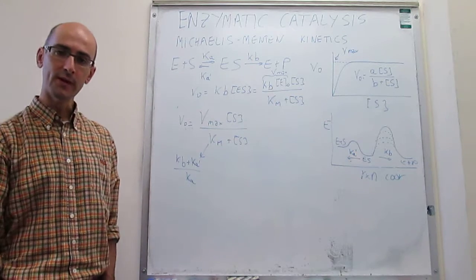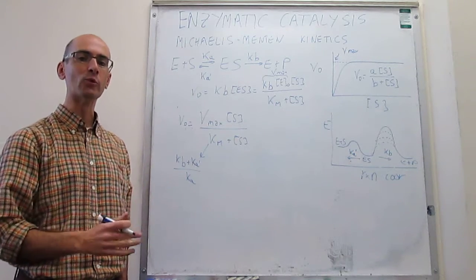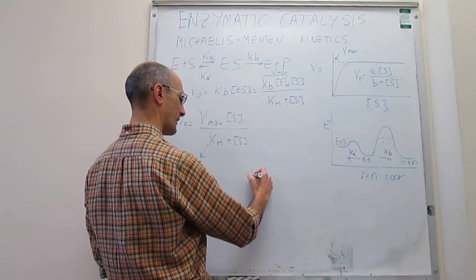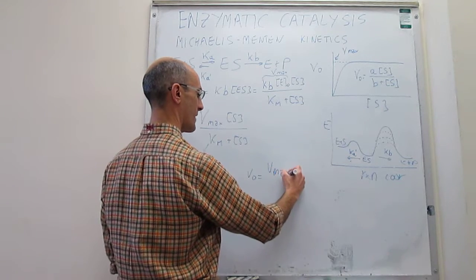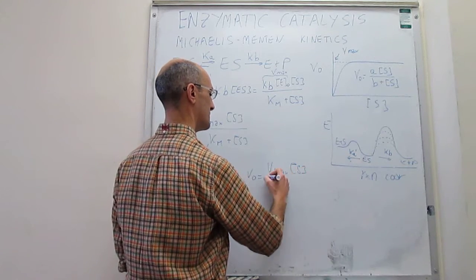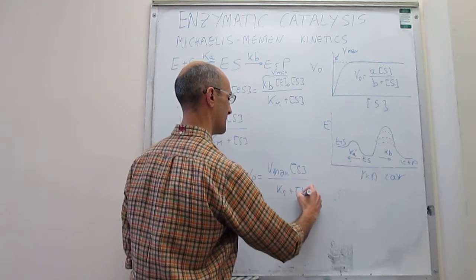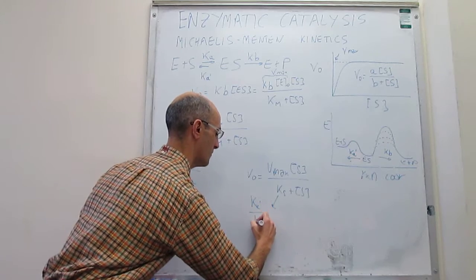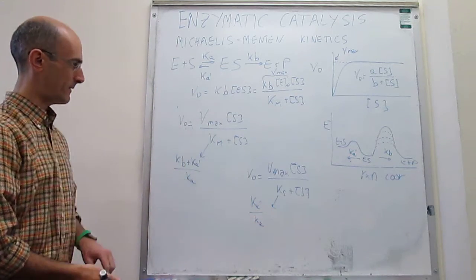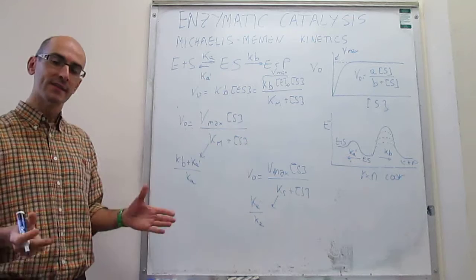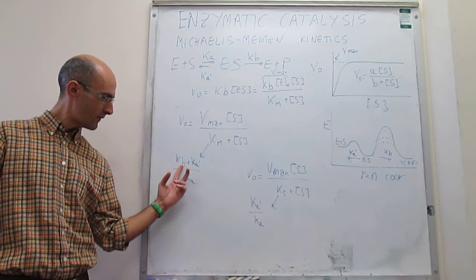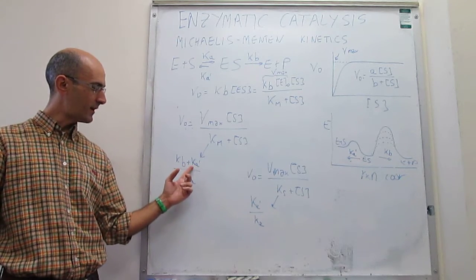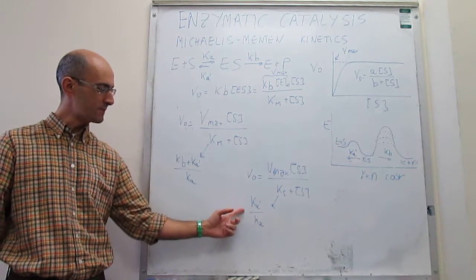Comparing this to the pre-equilibrium treatment rate law, which has v = V_max [S] / (K_S + [S]) with K_S = k_A' / k_A, the two rate laws are essentially identical. The only modification is that K_M has the additional rate constant k_B added to k_A' in the numerator, which is absent in the pre-equilibrium result.